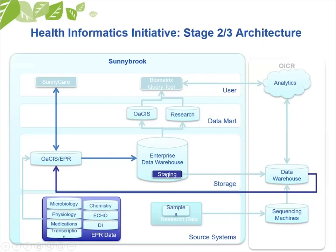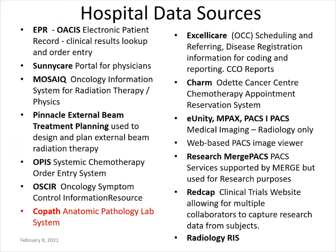This is Sunnybrook's picture. There's a myriad of different data sources in a large health sciences center, and a lot of the work we've been doing is to figure out how to bring information from those sources together — both from a technical point of view and in terms of governance, privacy, and security. These are some of the internal hospital data sources. One we think about a lot is COPATH, which is our pathology lab information system, because pathology information comes into just about every kind of research study we're interested in.